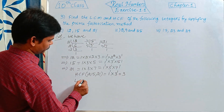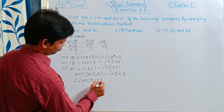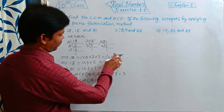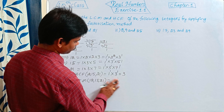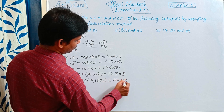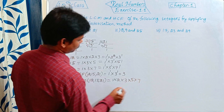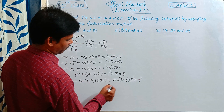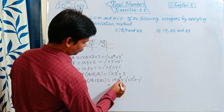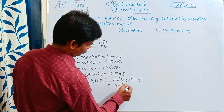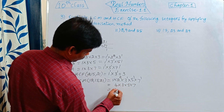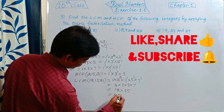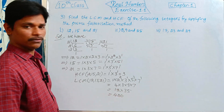So next, LCM of 12, 15, 21. That is equal to the greatest powers of all prime factors. The prime factors are 1, 2, 3, 5, 7. So the greatest powers are 2², 3¹, 5¹, 7¹. Multiply: 1 × 2² × 3 × 5 × 7 = 4 × 3 × 5 × 7 = 12 × 35 = 420. So LCM = 420.